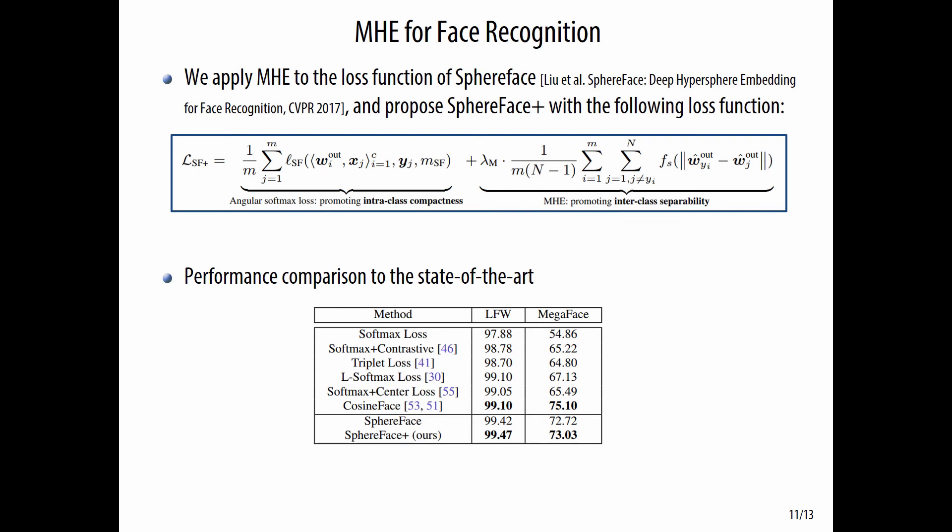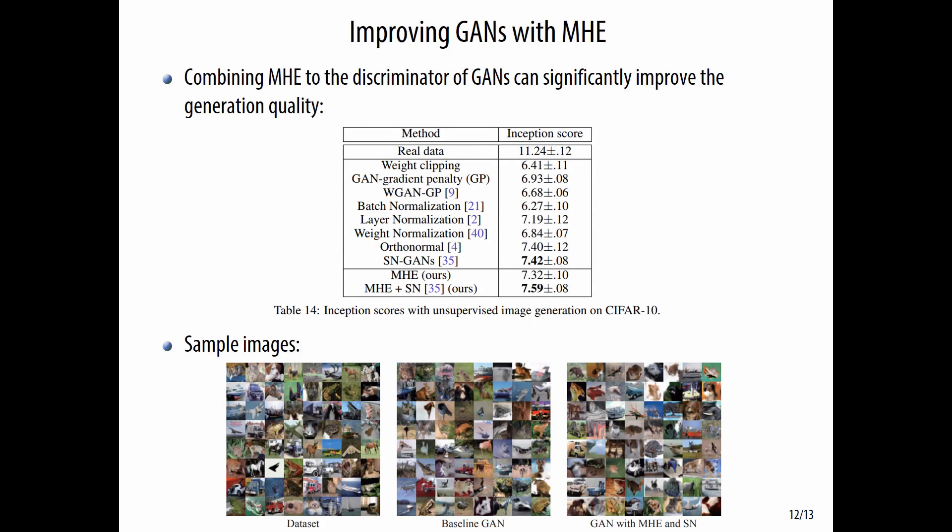The final loss is given in the box. As expected, the performance gain is very significant. Interestingly, we find that combining MHE to the discriminator of GANs can significantly improve the generation quality.